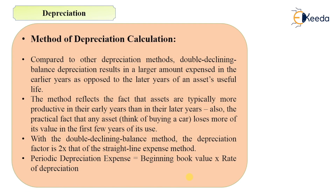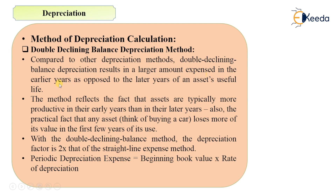The second method is the double declining balance depreciation method. Compared to other depreciation methods, this method results in a larger amount expensed in the earlier years as opposed to the later years of an asset's useful life. This reflects the fact that assets are typically more productive in their earlier years than in their later years.